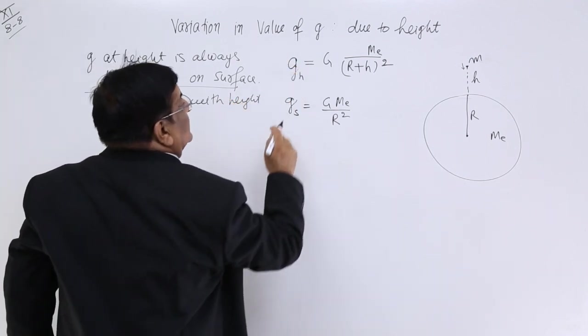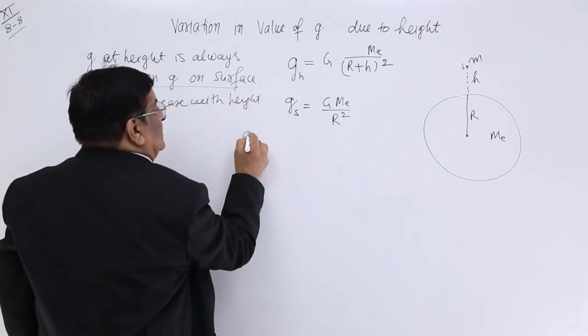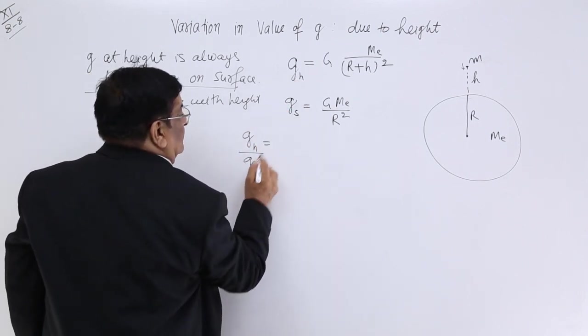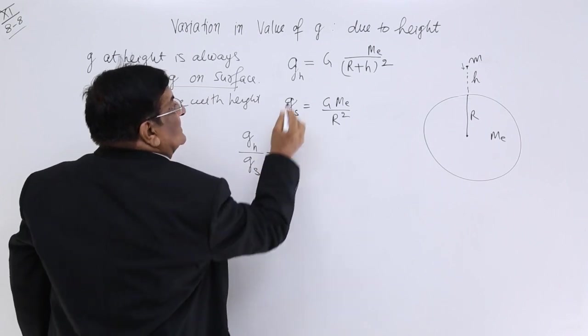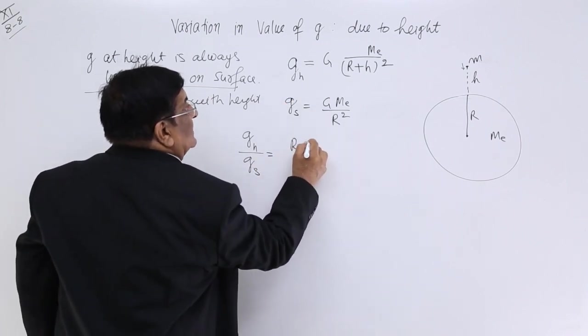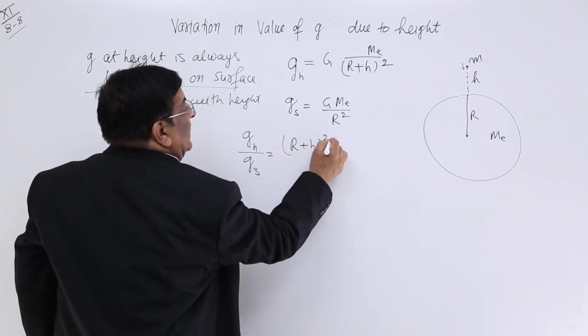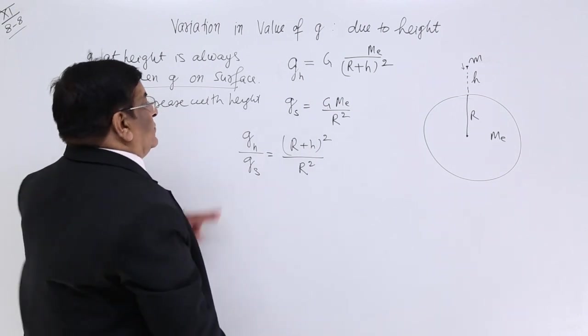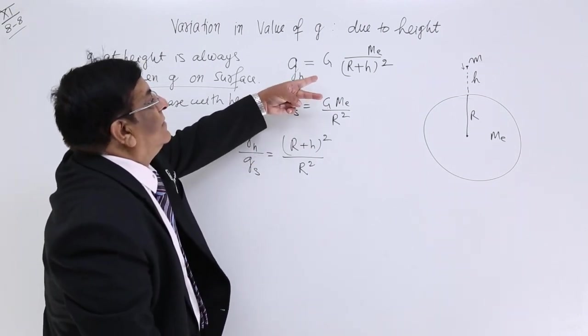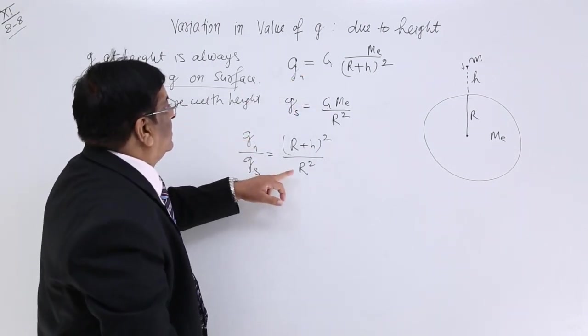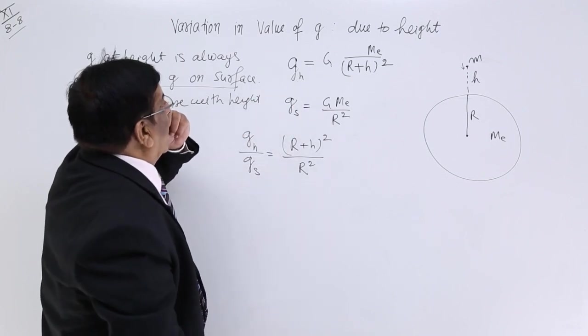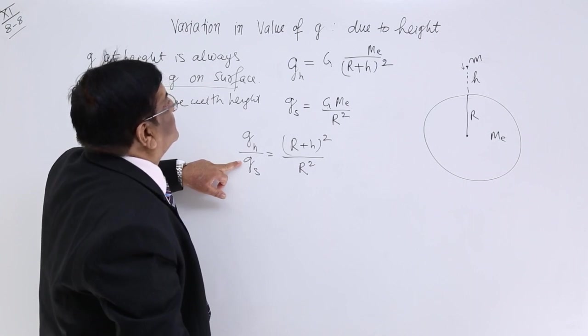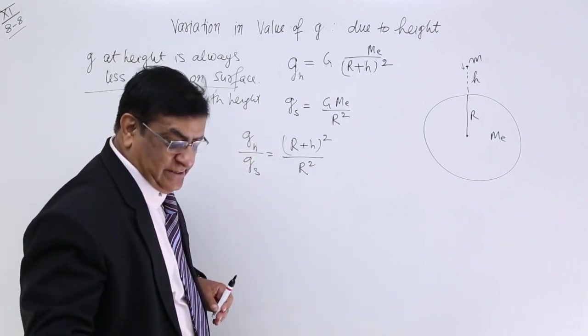If we want to compare the two, then G at height is equal to, let us divide the two. This is equal to R plus H square upon R square. G M e, G M e cancels. So this is, get reverse. So it is this way. G_h upon G_s.